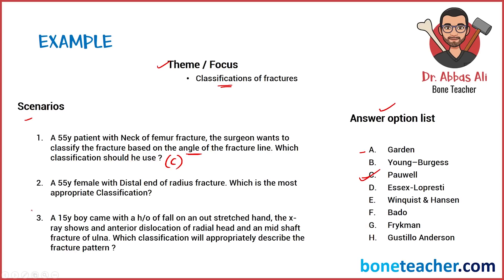The second scenario: a 55-year-old female with a distal end of radius fracture — which is the most appropriate classification? The answer is Frykman's classification, because that is the classification used for distal end radius fractures.